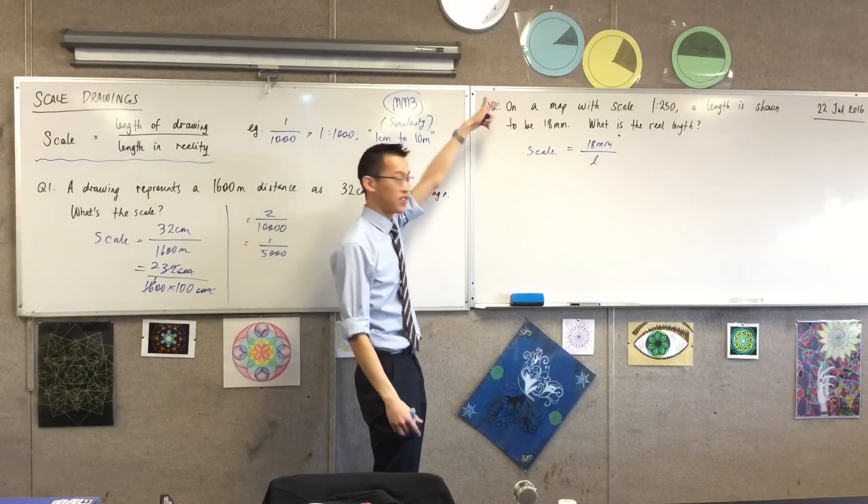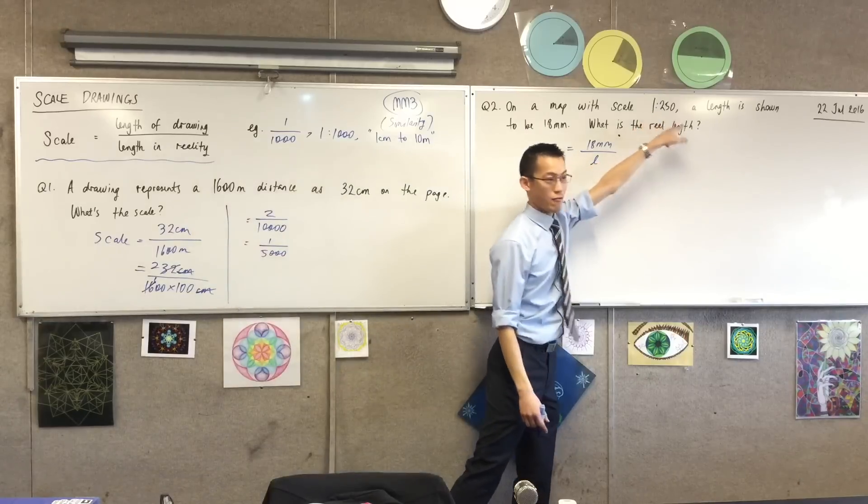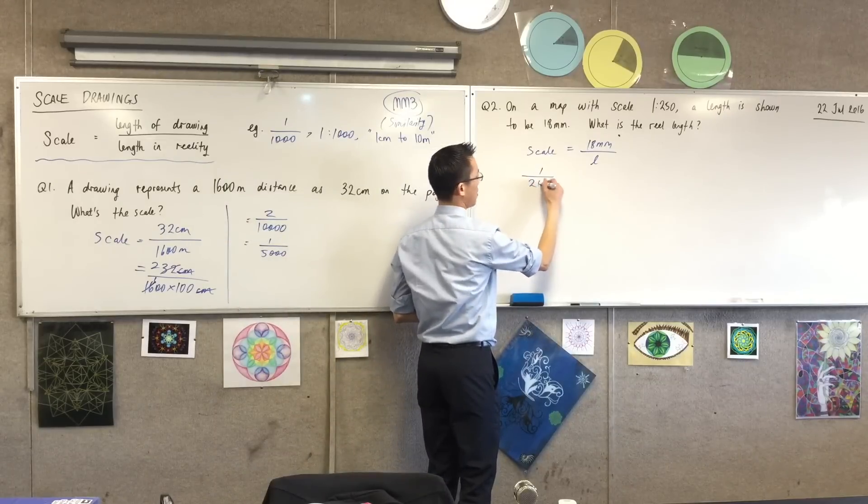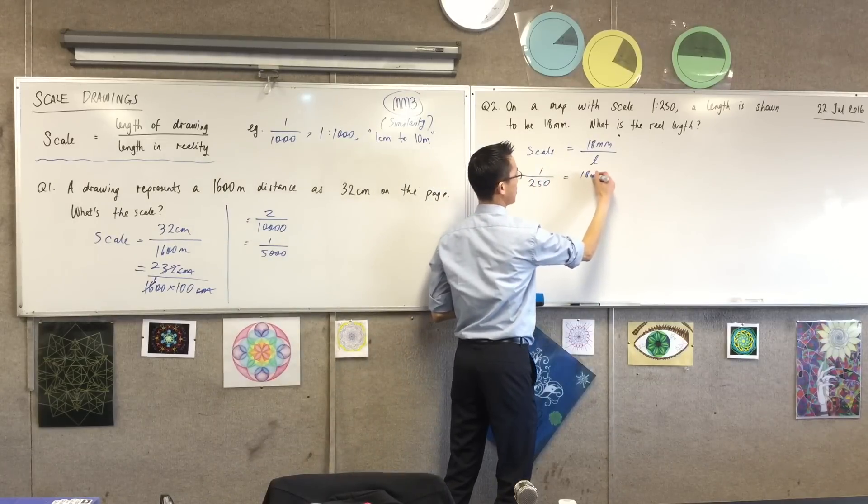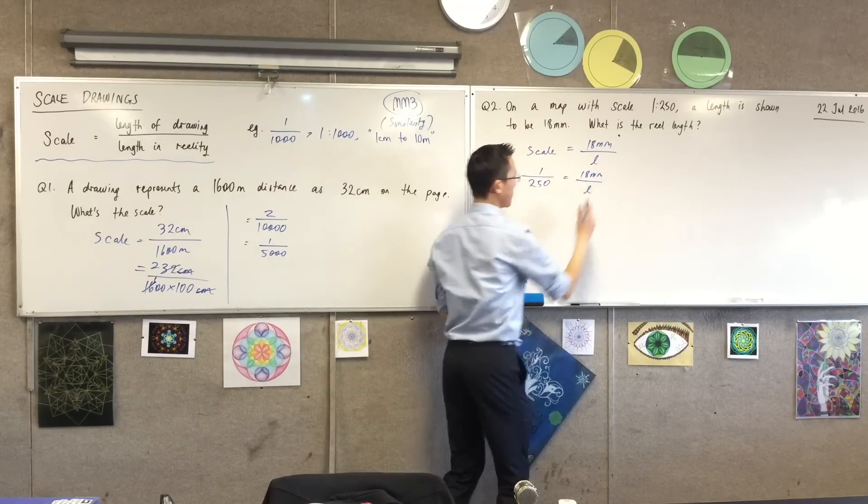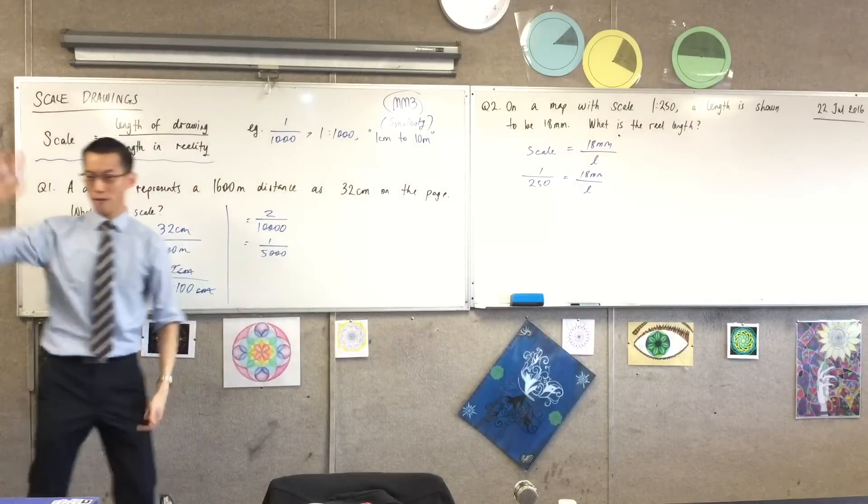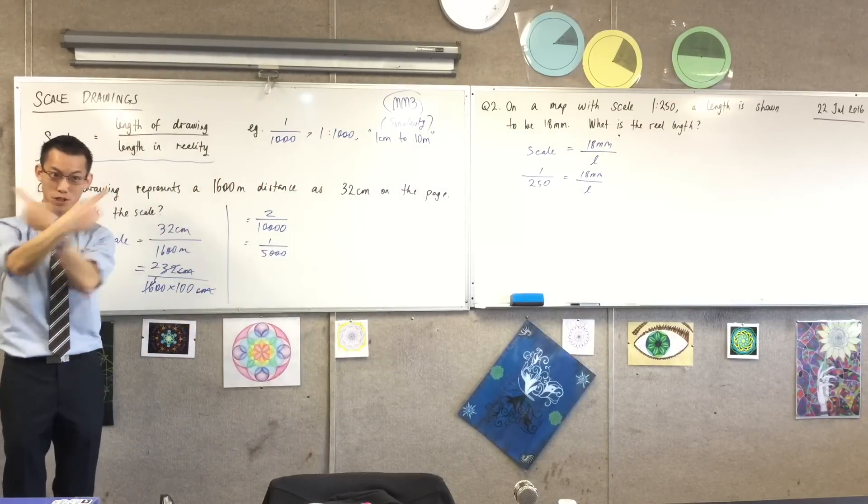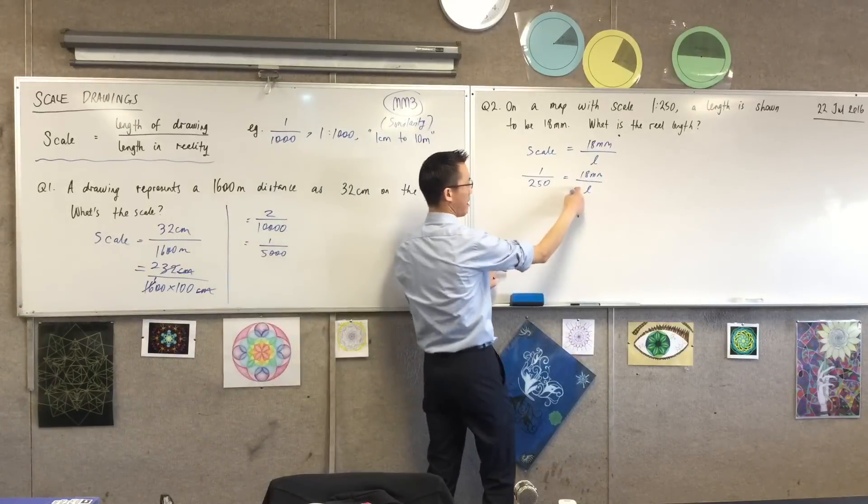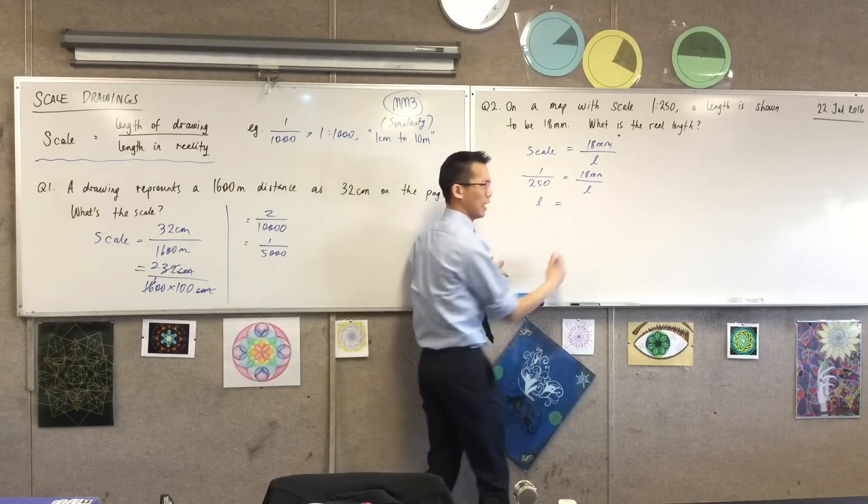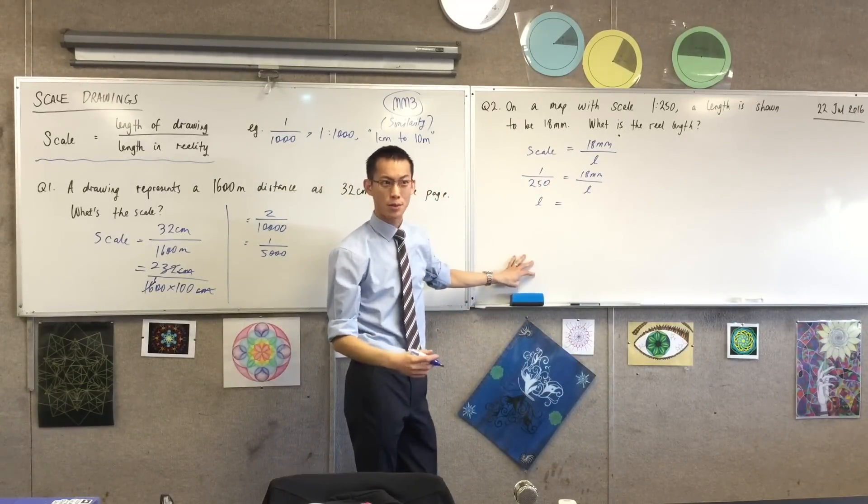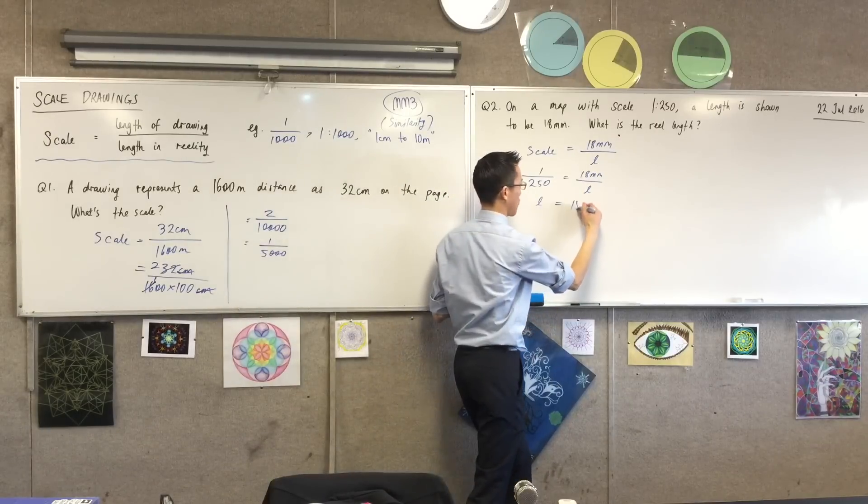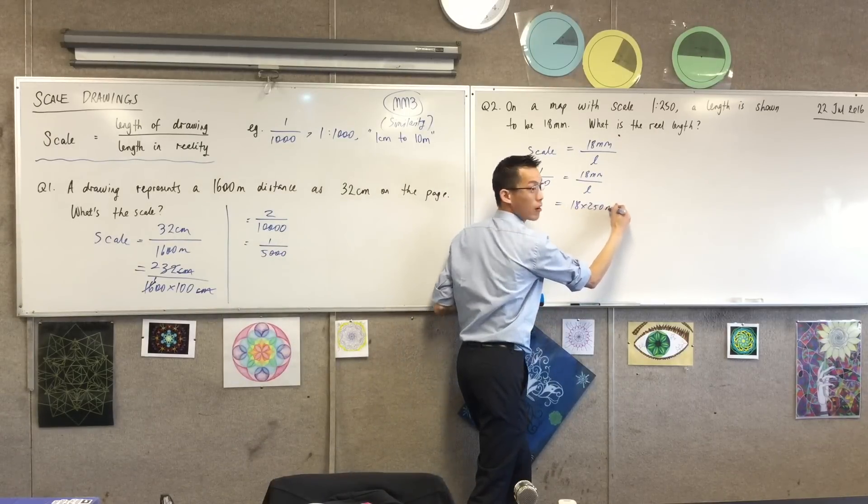Now I actually know the scale as well. It's provided in the question. So rather than write it as a ratio, I'll write it as a fraction, so these guys can talk to each other. So that's 1 over 250. And now perhaps you recognise I've got a fraction on the left, a fraction on the right. So I can cross multiply and get something just for L. L over here to the left. I don't know what 18 times 250 is. Can someone find it for me? Four. Five, one, two. Thank you.